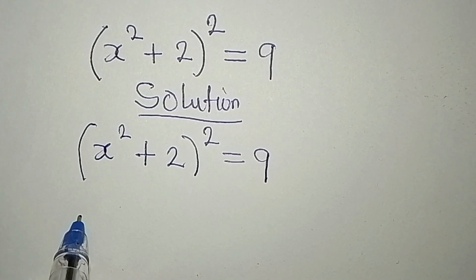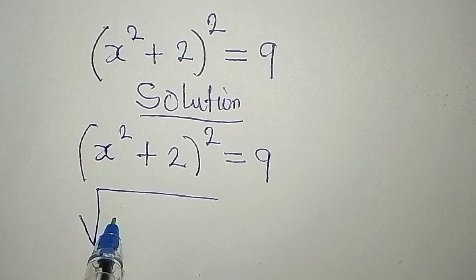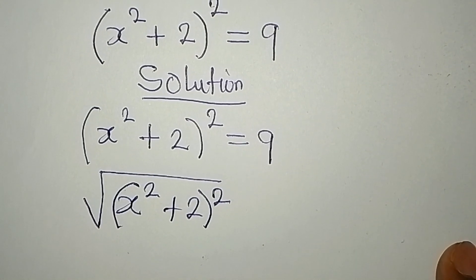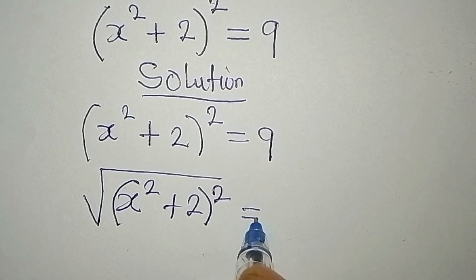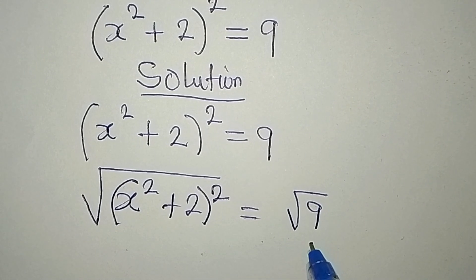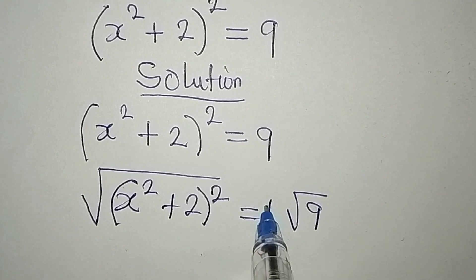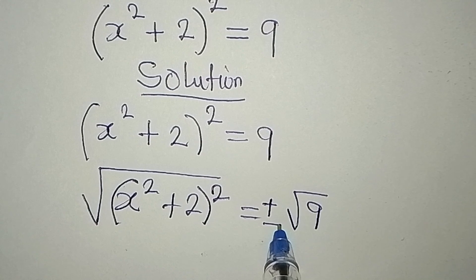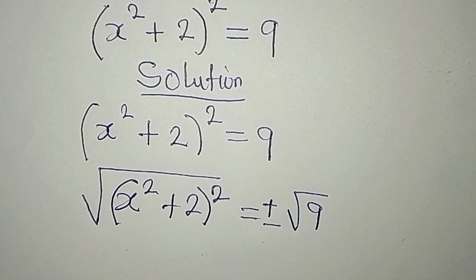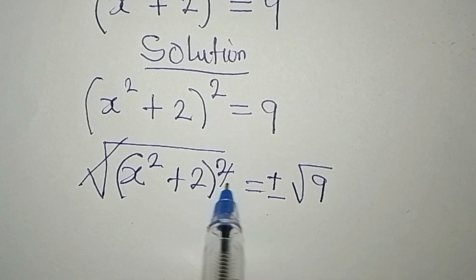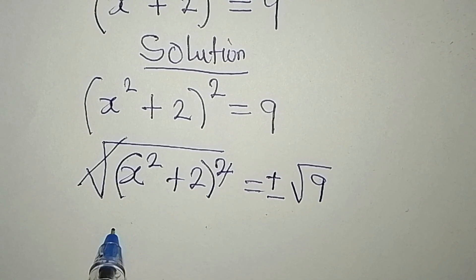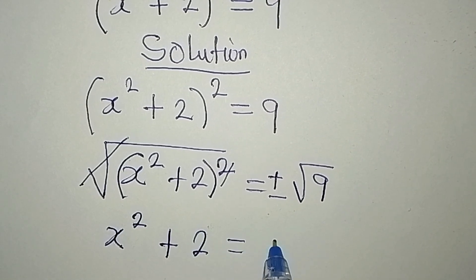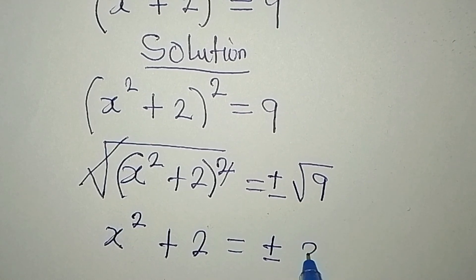We'll have the square root of (x squared plus 2) to the power of 2, and because we squared the left side, we also have to square the right hand side. Every time you take the square root of the right hand side, you have to take it positive or negative. The square root and the square will cancel, leaving x squared plus 2 on the left hand side, equal to positive or negative square root of 9.